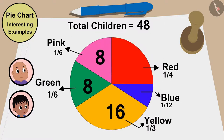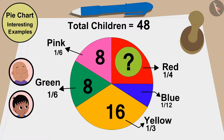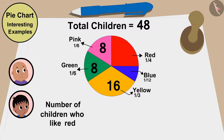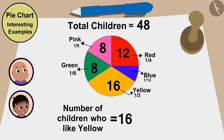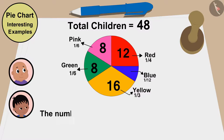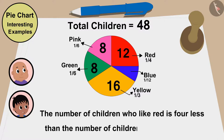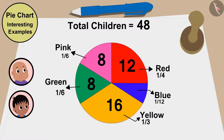The share of children who like red is also quite large, but a little smaller than the share who like yellow. Let's find out how many children like red. The number of children who like red will be 48 times one fourth, or 48 divided by 4, which is 12 children. Since yellow is liked by 16 children, the number of children who like red is 4 less than those who like yellow.